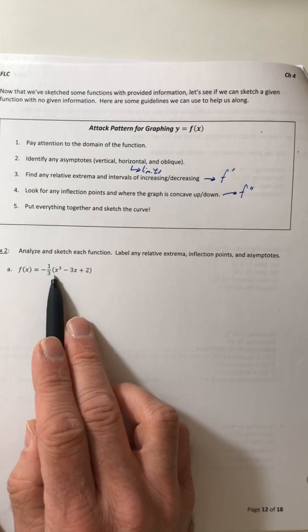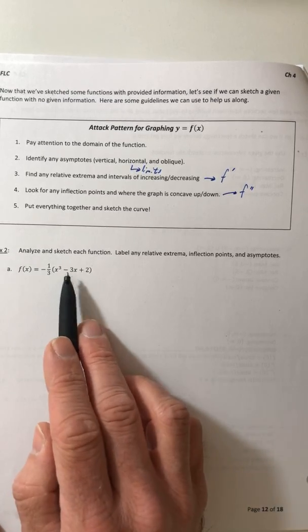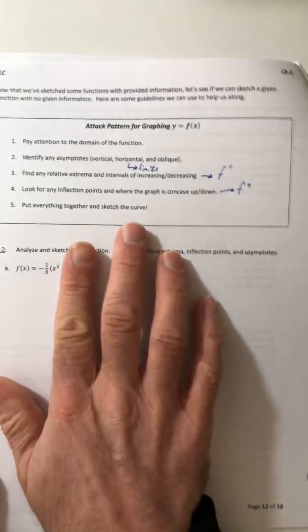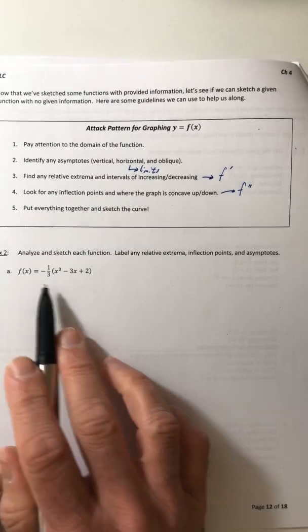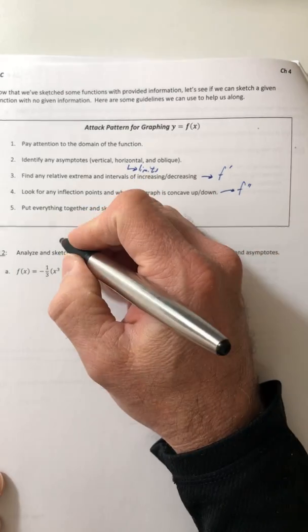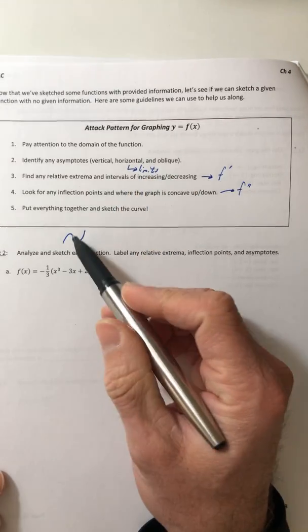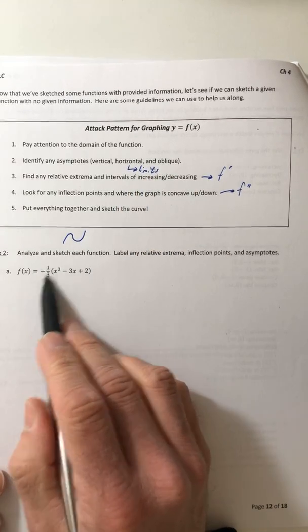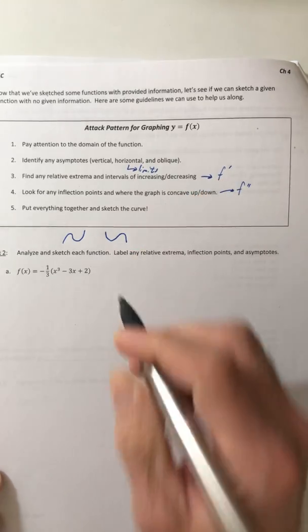So like for this one, x to the third, x to the third graphs, when there are other terms in there, if it was just x to the third on its own, that would just be a regular slide. But if there are other terms, x to the third graphs look like this, they look like an n. And then if there's a negative in front of it, it flips it upside down and it looks like that.